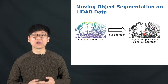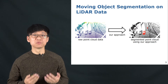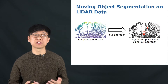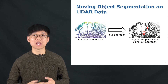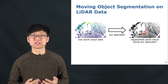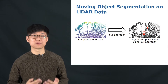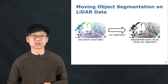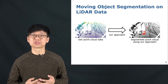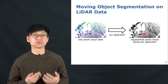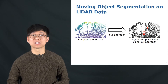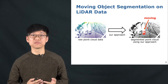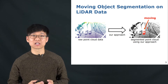In this work, we aim at moving object segmentation on LiDAR data. Instead of segmenting the point cloud semantically and predicting semantic classes such as vehicles, roads, buildings, etc., we rather focus on segmenting into two parts. One part is the actually moving objects, such as moving cars, pedestrians, and cyclists.